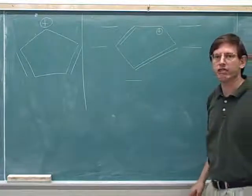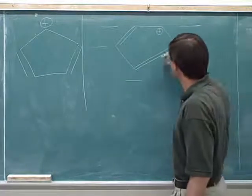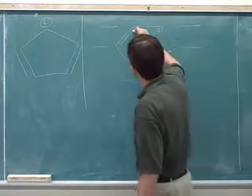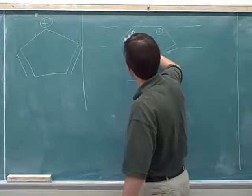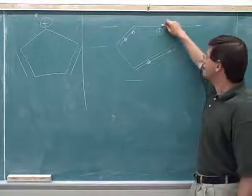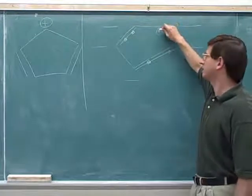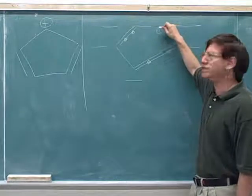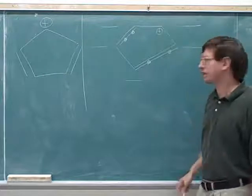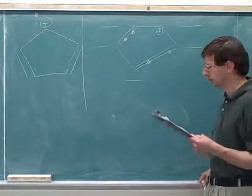Now let's count how many pi electrons we have. There's two electrons in this pi bond. There's two electrons in this pi bond. This atom also has a p orbital, but because it's a carboid cation, this p orbital is empty. So it's not contributing any pi electrons. So we have four pi electrons total.